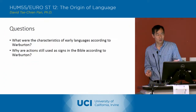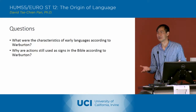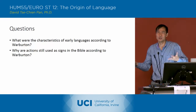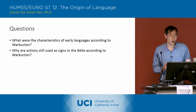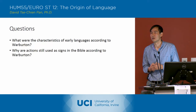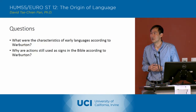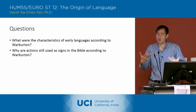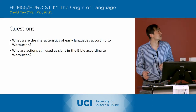The instructor asks what the characteristics of early language were according to Warburton. A student answers: a mixture of speech and signs. The instructor confirms it is a mixture of words and actions, and notes it is primitive and rudimentary. Asked why actions are still used as signs in the Bible according to Warburton, a student explains they are easier for everyone to understand and are lively and exciting, making a deeper impression on people.